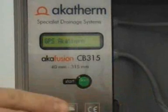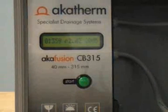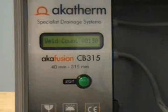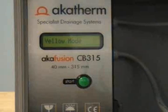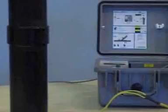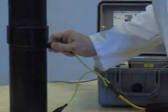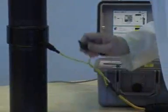Turn the Akotherm Electrofusion unit on. Follow the on screen instructions to connect the output leads. Depending on the pipe size different output leads must be used. For sizes between 40 and 160mm use yellow leads. For bigger pipe sizes use the blue output leads.